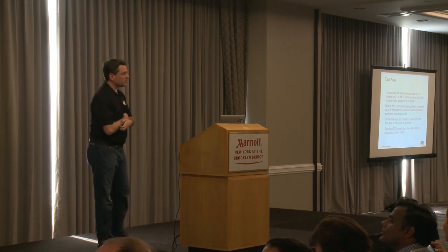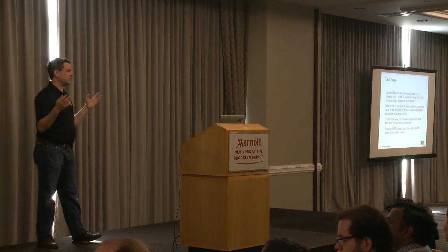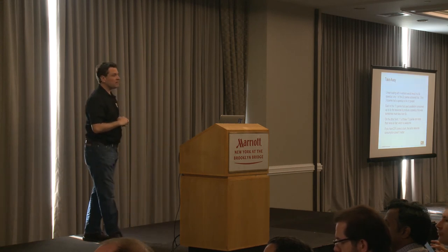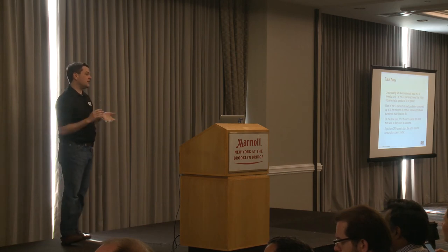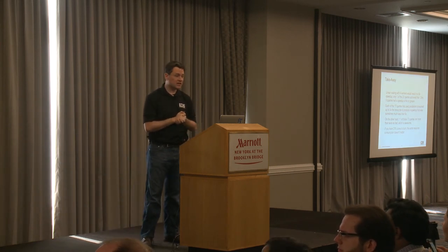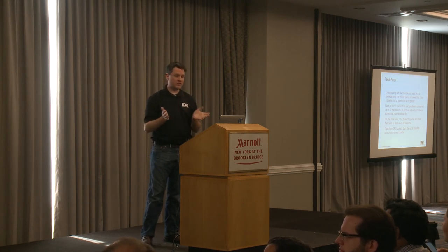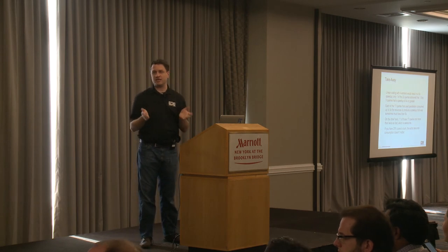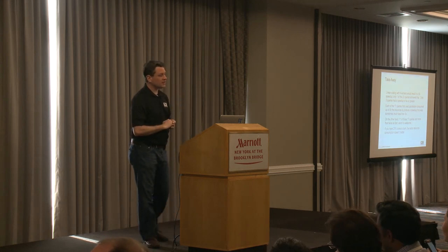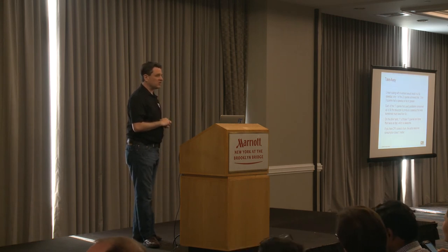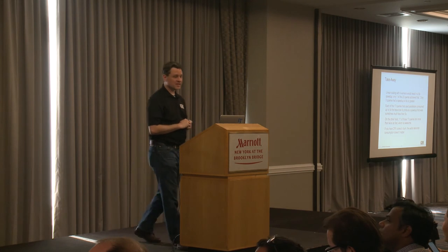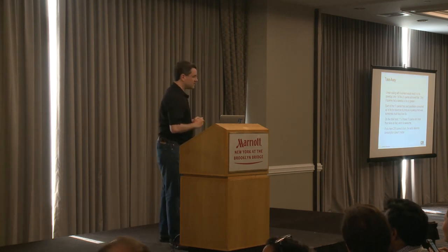The takeaway: with four workers we have five processes instead of one, so we should get a 5x speedup if everything is perfect. Only one of the 22 queries achieved that. Only three queries had a speedup of 4x or greater. Each of the 17 queries that used parallelism consumed perhaps as much as five times the resources for sometimes much less than 5x speedup. On the other hand, if you have extra CPU cores sitting idle, using them for some speedup is much better than not using them at all. And 11 out of 22 total queries were more than twice as fast, which is really great.